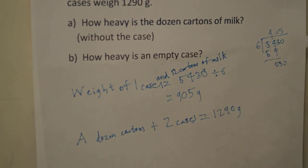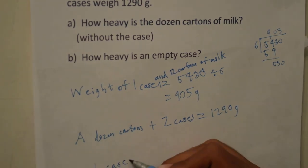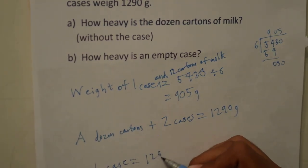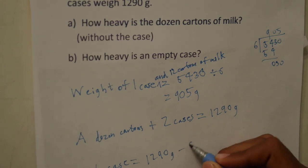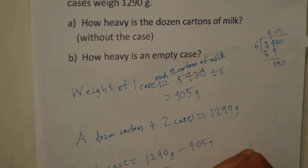And now we know that the case with 12 cartons of milk is 905 grams. So one case is just equal to 1,290 grams minus 905 grams, which is equal to 385 grams.